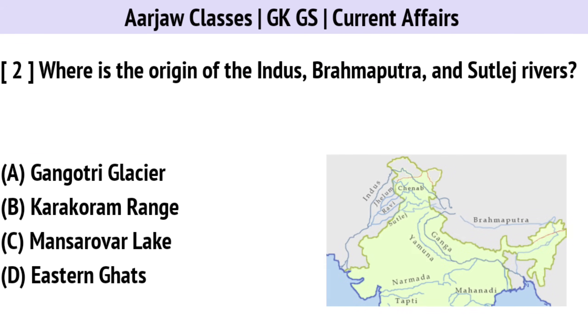Where is the origin of the Indus River, Brahmaputra River, and Sutlej Rivers? Correct option is C — Mansarover Lake.